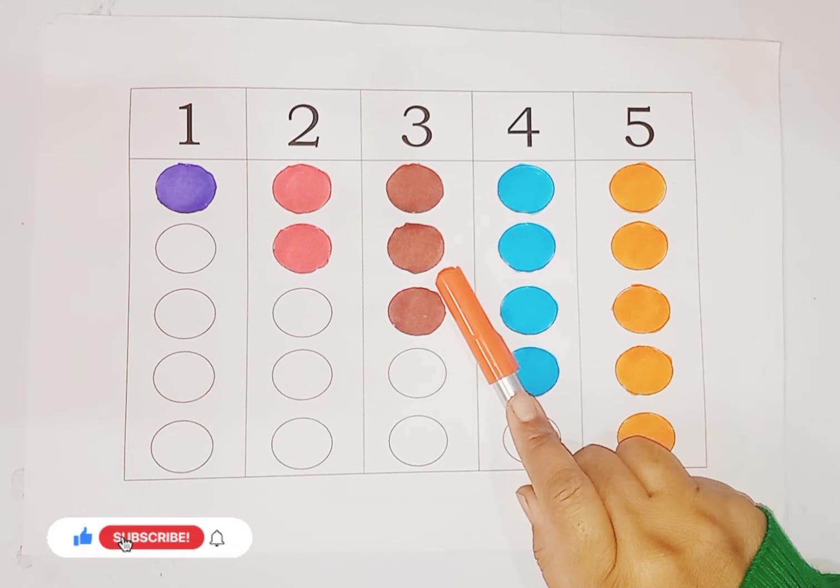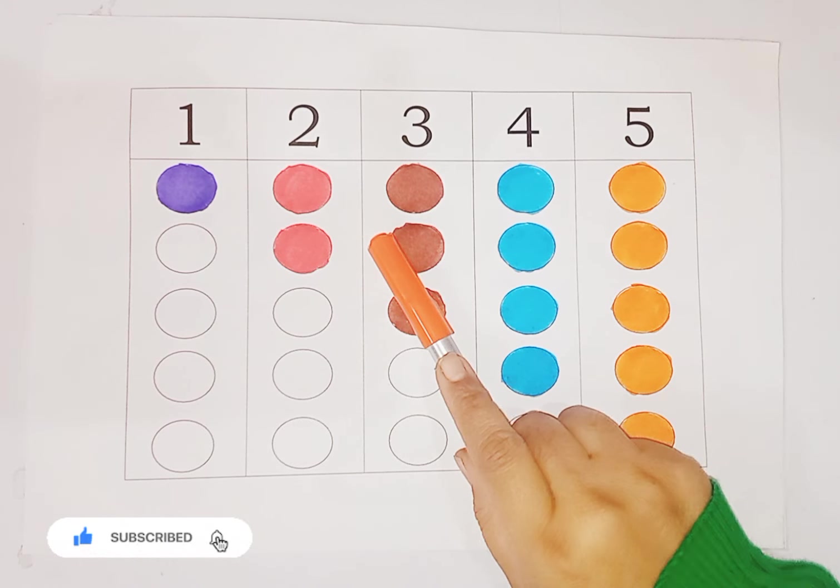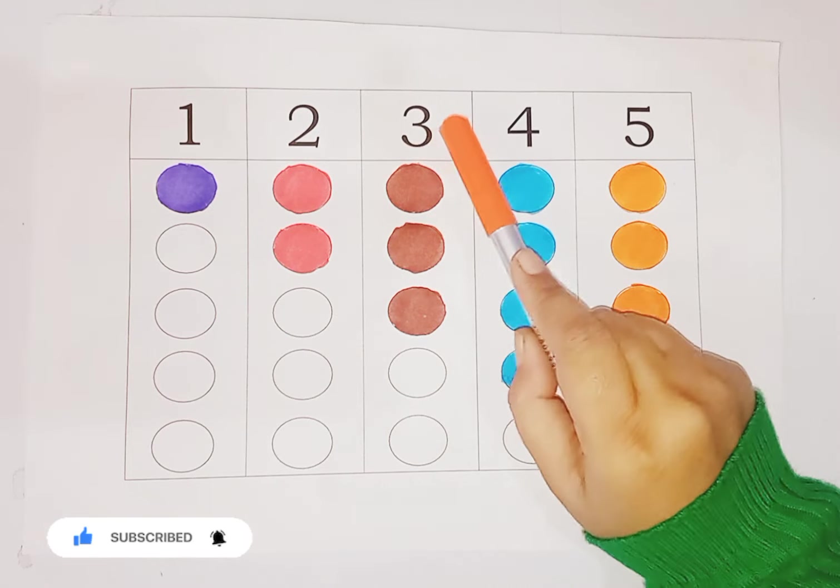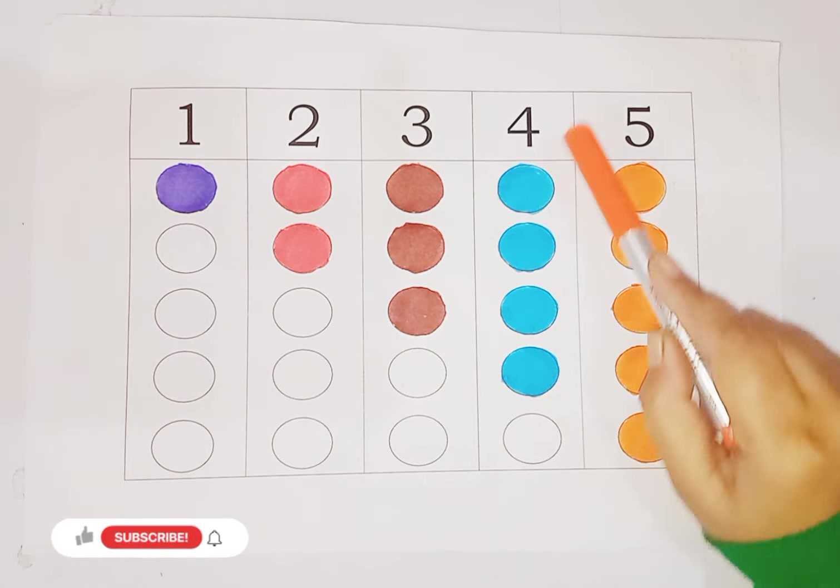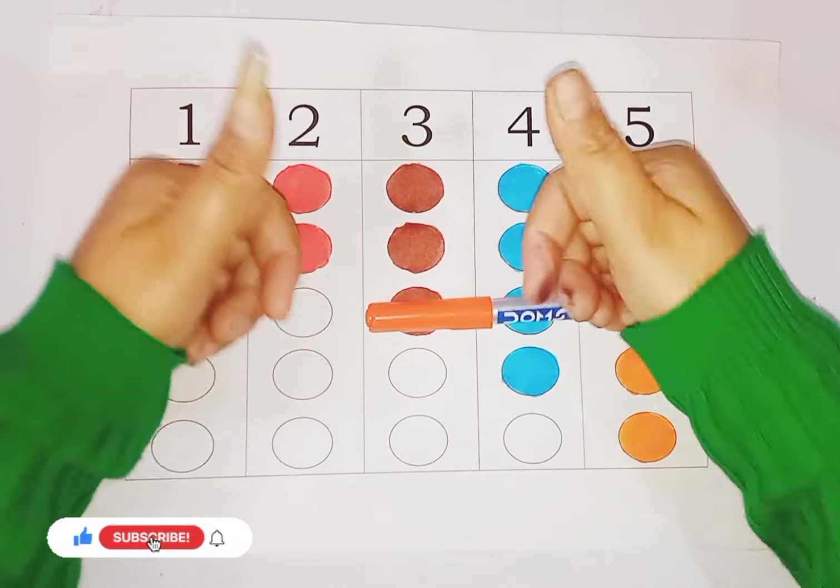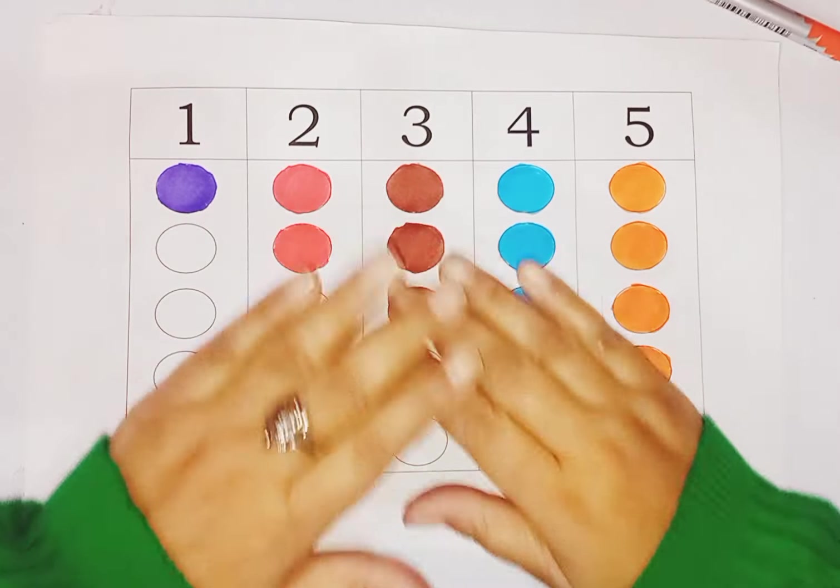So kids, today we learned number names and shape names. 1, one circle. 2, two circles. 3, three circles. 4, four circles. 5, five circles. So kids, I hope you like the video. If you like the video, please like and subscribe my channel. Bye bye.